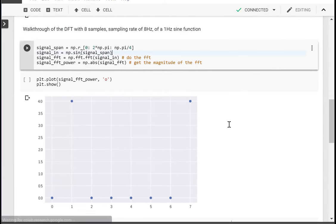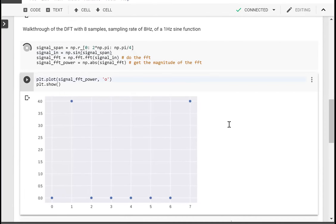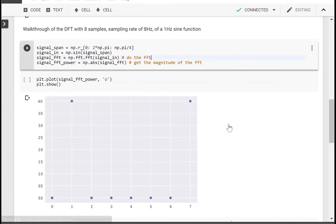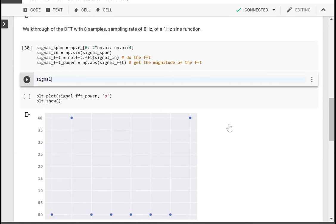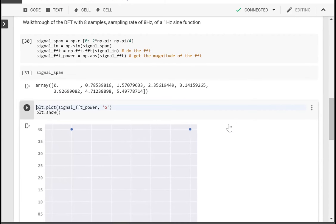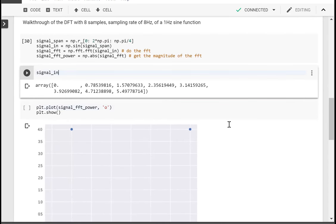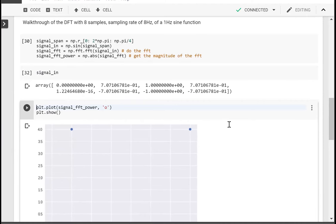My signal itself is sine of those eight points, and so I get eight points out there. Let's actually just run this real quick so that we have something to look at. I'm going to add a new code block, and we're just going to look at signal_span. We have an array that goes from zero to π over 4 to π over 2 to 3π over 4. Then I've got signal_in, which is the actual sine of that.